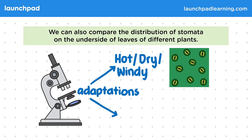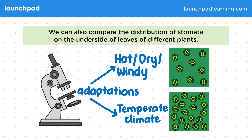However, a plant that is adapted for a temperate climate — so a mild climate — would look more like this. There are more stomata to allow more gas exchange without the worry that the plant will lose too much water. Before moving on, see if you can think how we can work out how many stomata there are in a given area.